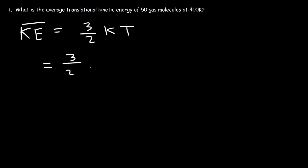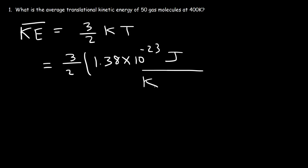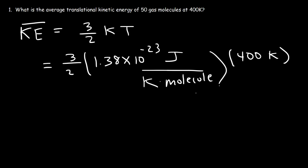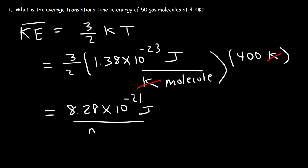Pay attention to the units. Boltzmann's constant is 1.38 times 10 to the negative 23 joules per kelvin per molecule. And the temperature is 400 Kelvin. So we can see that the unit kelvin will cancel. If we take 3 times 1.38 times 10 to the minus 23 times 400 divided by 2, this will give us 8.28 times 10 to the negative 21 joules per single molecule.